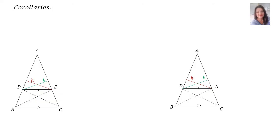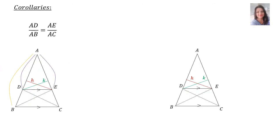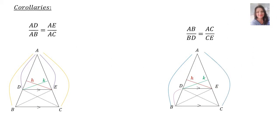Now let's discuss the corollaries. We can also say that AD over AB is equal to AE over AC, because a line parallel to one side of a triangle divides the other two sides in the same proportion. We can also say that AB over BD is equal to AC over CE.